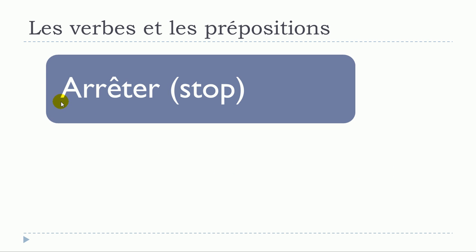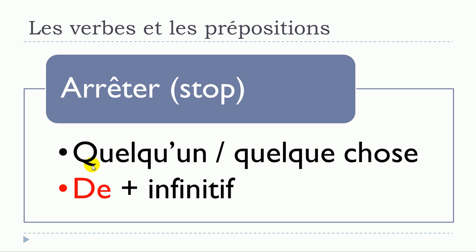Next verb: arrêter — to stop. First structure — no preposition — arrêter quelqu'un. Second structure: arrêter quelque chose. Third structure: arrêter de + infinitif, where the verb that follows must be at the infinitive form. So: arrêter quelqu'un, arrêter quelque chose, arrêter de + verbe à l'infinitif.